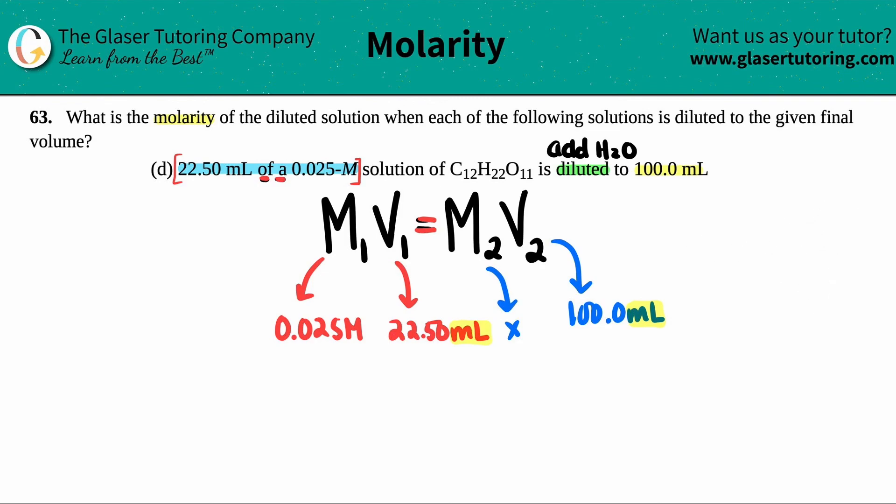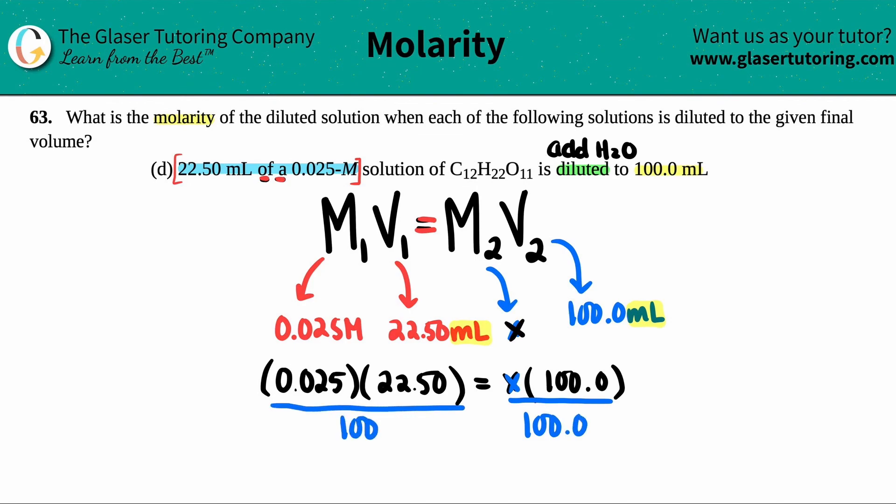Now let's just solve. I have all my numbers and my variable. Let's solve for x. 0.025 times—M1V1, they're being multiplied by each other—so 22.50 equals x times 100. We want to solve for x, so we divide by 100.0 on both sides.